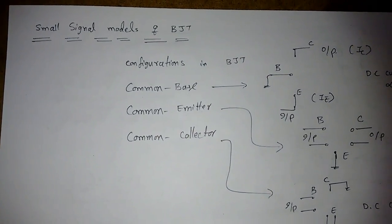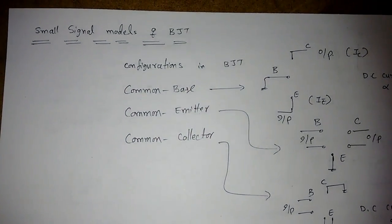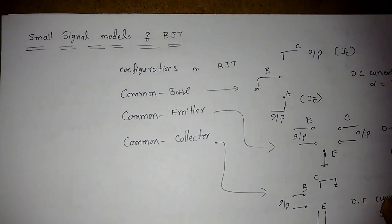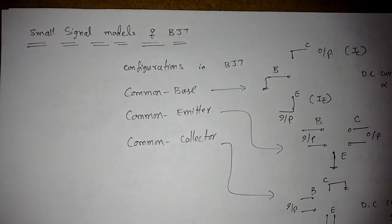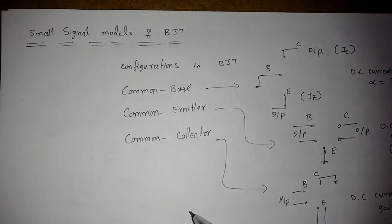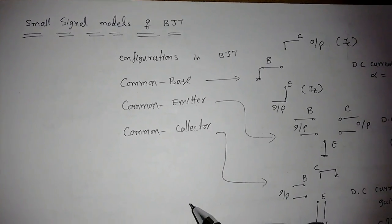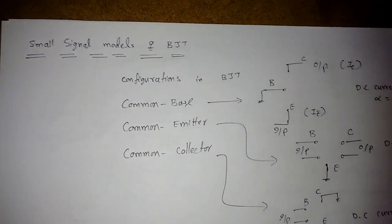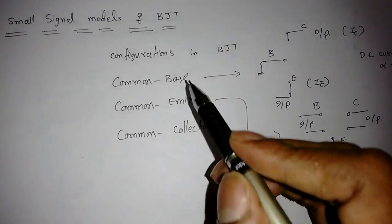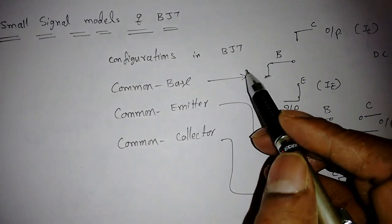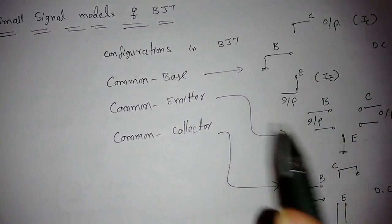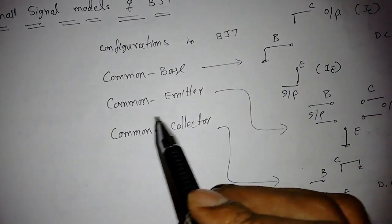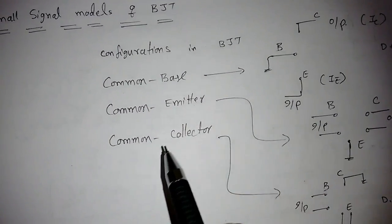Good morning everyone. In this lecture I'm going to discuss the small signal models of bipolar junction transistors. Before that, we need to see what are the configurations in BJT — those are common base configuration, common emitter configuration, and common collector configuration.